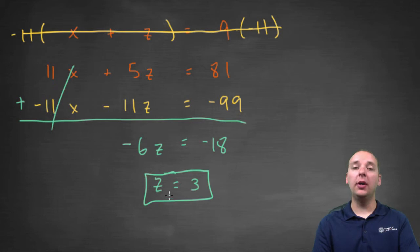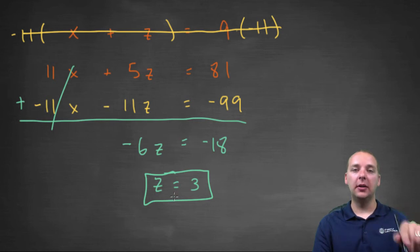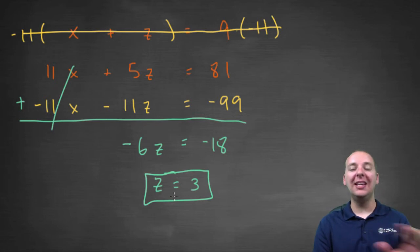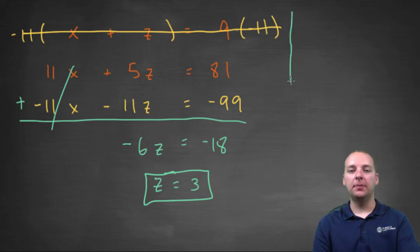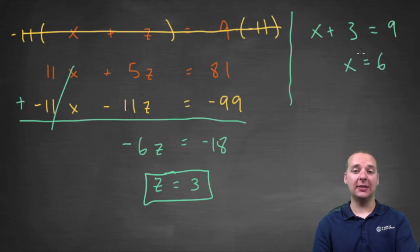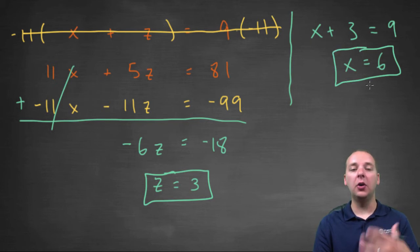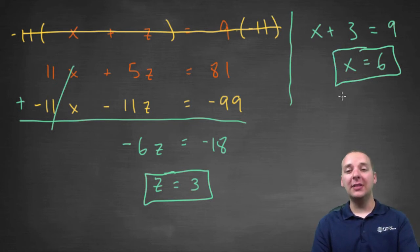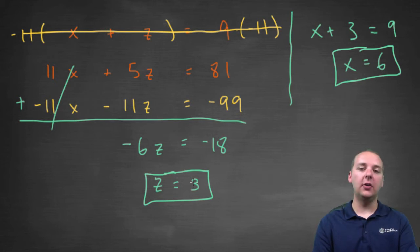Great, so that's one of the three values. From here it's all downhill — we just back-trace to find the remaining unknowns. We know that x plus z equals 9. Substituting z equals 3 gives x equals 6.